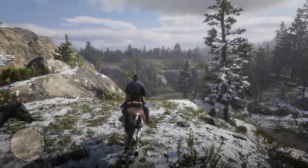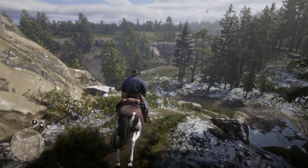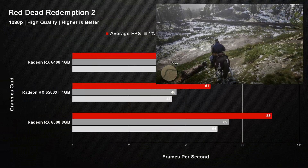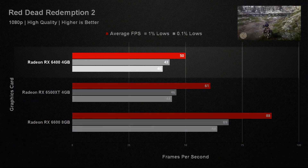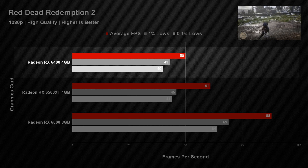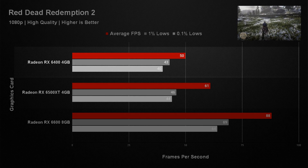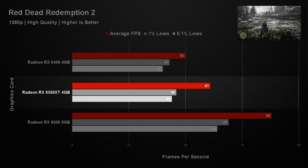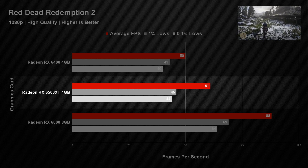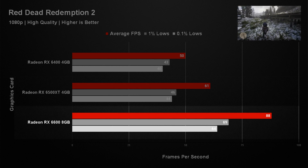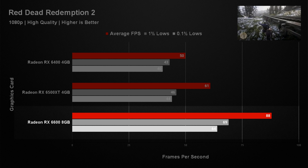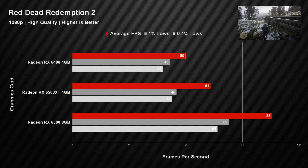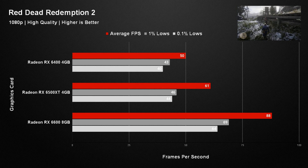Red Dead Redemption 2 was one of the older games in our test suite and the first where not all cards could reach the 60 fps target. The RX 6400 managed only 50 fps on average, while the RX 6500 XT hit the target only just. The RX 6600 demonstrated how demanding this game is with an average of 88 fps, suggesting much of the performance strain is down to the game itself.